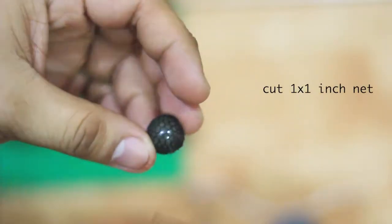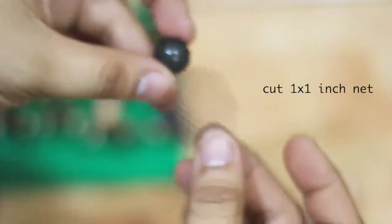Okay, this is the net that you need. You need a net. So first cut this into one by one, like this one. So I cut it into one inch by one inch.